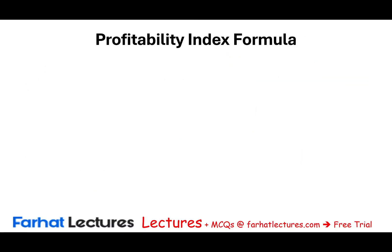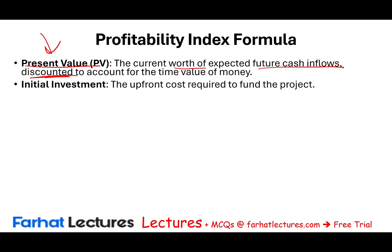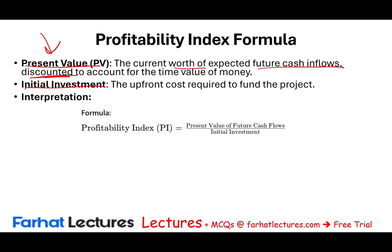Let's go ahead and get started by looking at the formula for the Profitability Index. The present value is the current worth of expected future cash flows discounted to account for the time value of money. Divide this by the initial investment — the upfront cost required to fund the project. Present value of future cash flows divided by the initial investment gives us the PI, the Profitability Index.